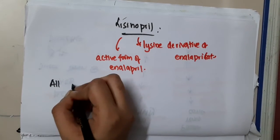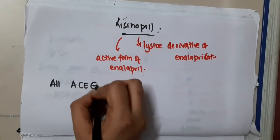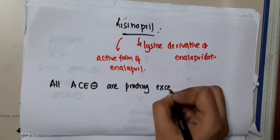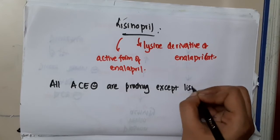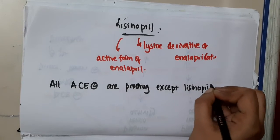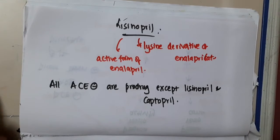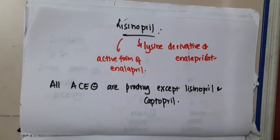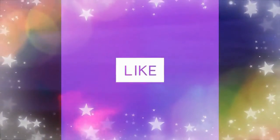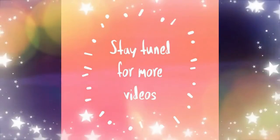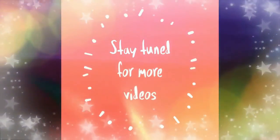Now there is one important sentence: all ACE inhibitors are prodrugs except lisinopril and captopril.